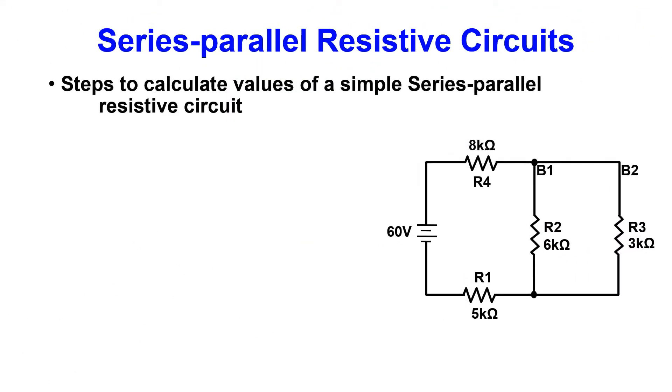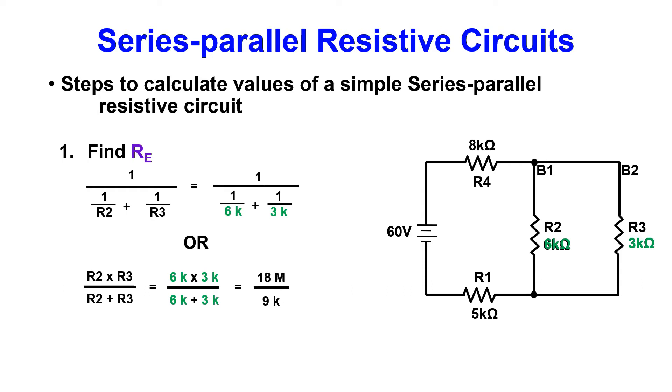To calculate values in the series parallel circuit, we must first start with calculating our RE. For this, you should utilize the reciprocal method for calculating RE that you learned on day 5. To punch our example problem into the calculator, it would look like 6k x minus 1 plus 3k x minus 1 equals x minus 1 equals. This gives you 2k for a RE value. You can only utilize the product over sum method when you have two branches. For more than two branches, the fastest method is to utilize the reciprocal formula.